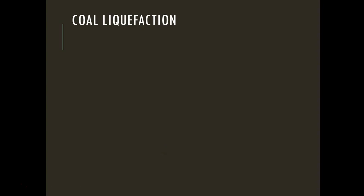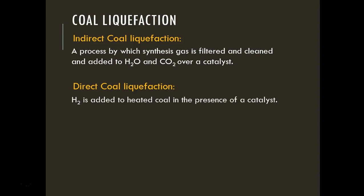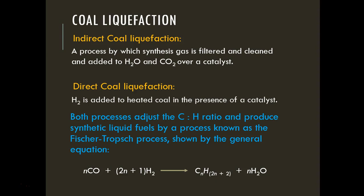Coal liquefaction is the process of turning coal into liquid fuels. Indirect liquefaction takes synthesis gas, filters and cleans it, and reacts it with water and CO₂ over a catalyst. Direct coal liquefaction—the more common method—adds hydrogen to heated coal in the presence of a catalyst. Both processes adjust the carbon-to-hydrogen ratio to produce synthetic liquid fuels through the Fischer-Tropsch process.